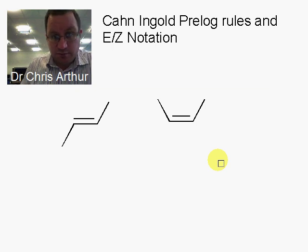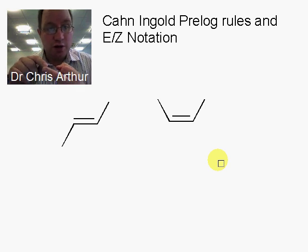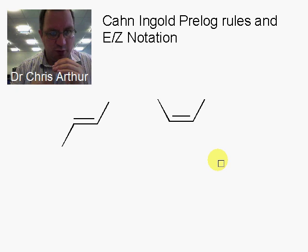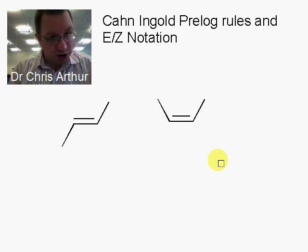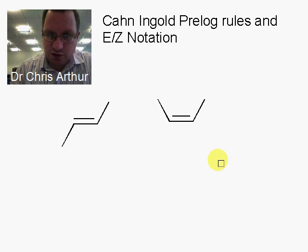There are three basic rules from Cahn-Ingold-Prelog. First, you look at the highest atomic number — the higher the atomic number, the more important an atom and a group is. Second, if you find something that's the same, you move to the next atom until you find the point of difference, then use rule one. Third, if you find a double bond or a triple bond, that's like having two or three of that atom attached. I'd encourage you to see the previous video for more detail.